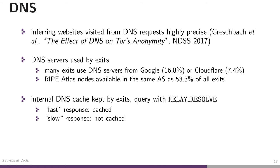Last but not least, we have DNS. From observing DNS requests, we can map these precisely to websites, as known from earlier work. DNS servers are used by exit relays in the Tor network to resolve domain names, and many exits use DNS servers from Google or Cloudflare. We did a measurement for a couple of days to get these percentages. We also observed that RIPE Atlas nodes are available in the same autonomous systems as about half by bandwidth of all exit relays. Each exit in Tor also has an internal DNS cache that you can query with the relay resolve command — a fast response means something was cached, a slow response means it was not.